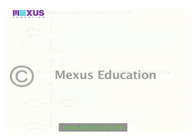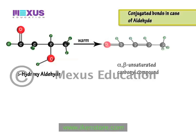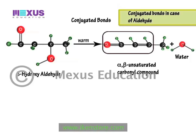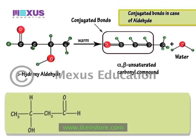Generally, the aldol reaction does not stop only at the aldol product. The beta-hydroxy aldehydes and beta-hydroxy ketones obtained from aldol condensation are very easily dehydrated on heating. Dehydration takes place readily because the alpha-beta unsaturated carbonyl compounds formed are a conjugated system, which adds to the stability of the molecule.